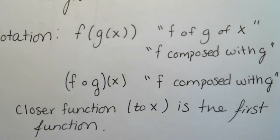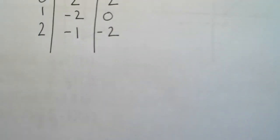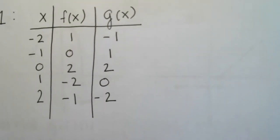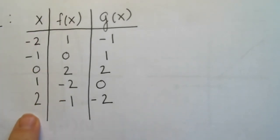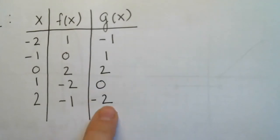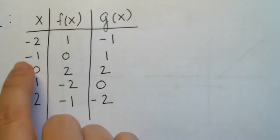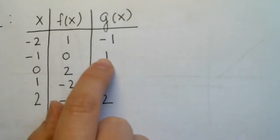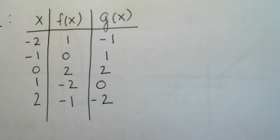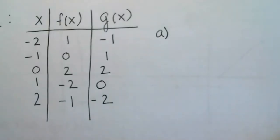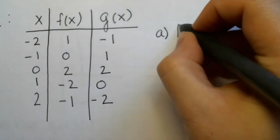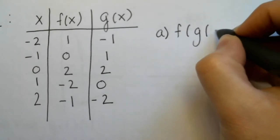Let's see an example of how to do this with a function represented by a table. We have two functions represented by a table — the x values, the f(x) values, and the g(x) values. For example, if you plug in negative 1 for g of x, g of negative 1 equals positive 1. That's how the table works.